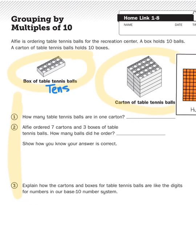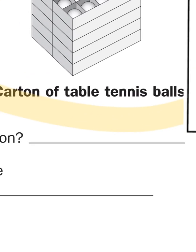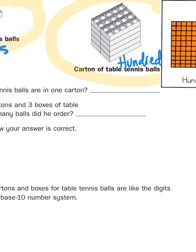And when I have a carton of 10 boxes of 10, 10 times 10, of course, would be 100. Okay, so we've cracked the code.